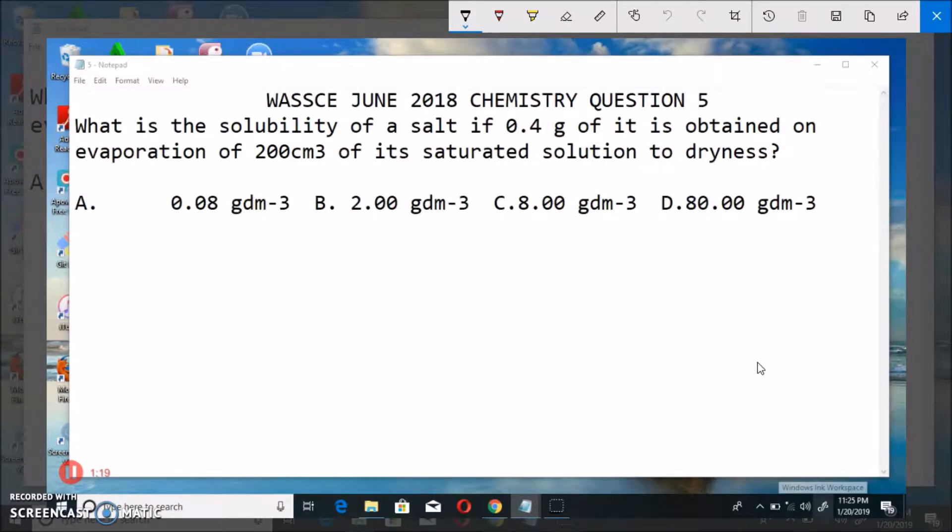Now, how do we solve this? We are going to start by noting that we are given 200 cm³, and this is saturated with 0.4 gram of the salt. That is what is given here. That 200 cm³ is actually saturated by 0.4 gram of the salt.